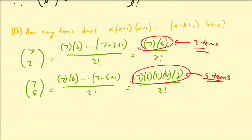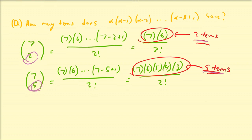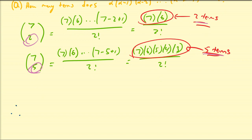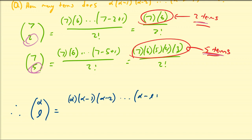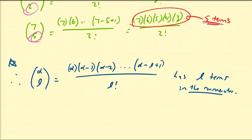Notice that the number of terms — two and five — corresponds directly to the bottom value of the binomial coefficient. So alpha over L, which equals alpha times alpha minus one times alpha minus two down to alpha minus L plus one, all over L factorial, has exactly L terms in the numerator. This can be proved using mathematical induction.